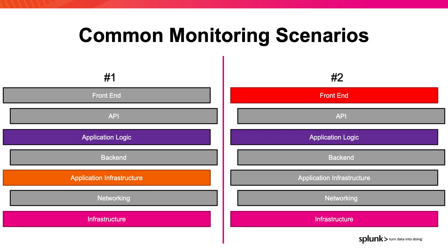If you don't connect these and something breaks in your application, then you have to hunt across all of these different silos of visibility, which ultimately end up becoming different languages that people are speaking to understand exactly what's going on. Another common scenario is where you'll get the application logic and the front-end with great visibility because the engineering team owns it, and then you have an operations team which is really great at understanding the infrastructure, but they miss everything in between.